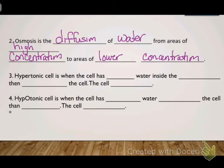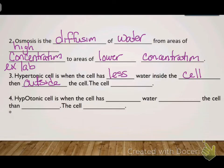When a cell gets particles that move back and forth, sometimes it makes a cell hypertonic. A hypertonic cell is when the cell has less water inside the cell, and that causes the cell to shrink.